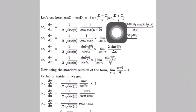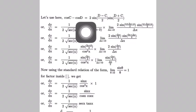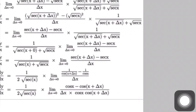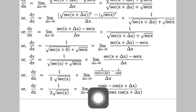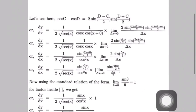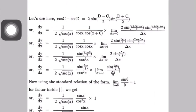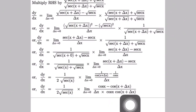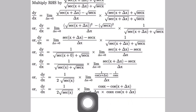Now we apply the standard identity cos C minus cos D. With C equal to x and D equal to x plus δx, we apply this relation. After using this identity, dy/dx equals 1/(2√(sec x)), and the factor 1/[cos x · cos(x + δx)] is taken out from the limit with δx replaced by 0.